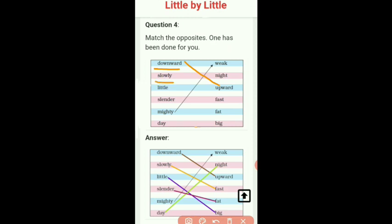Next word is slowly. And the meaning of slowly is dheere se. And the opposite will be fast. And the meaning of fast is tez, yaani tezhi se.